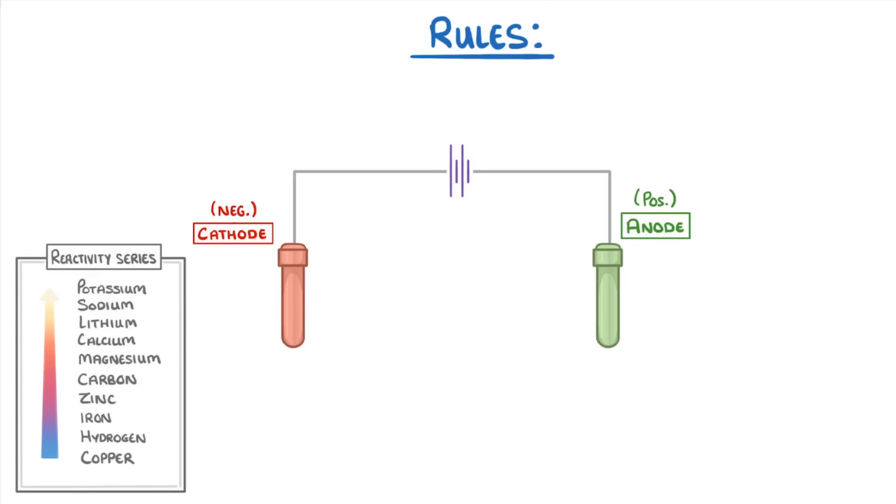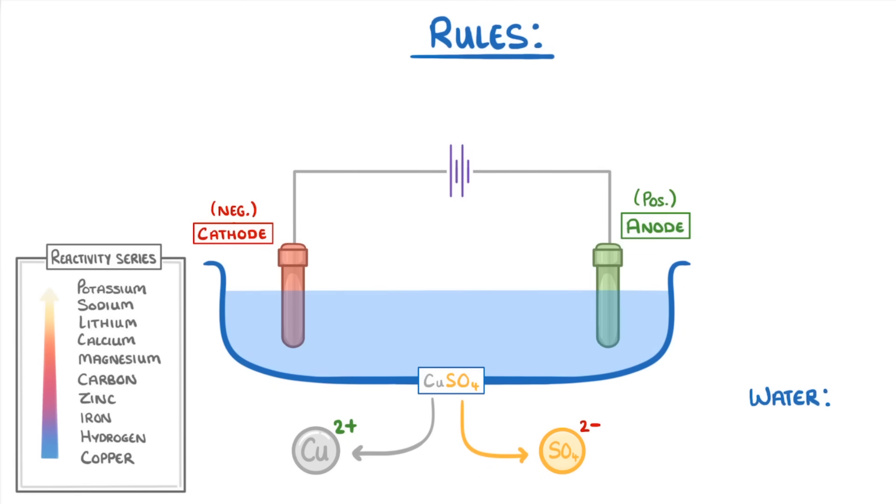To see how all of this works, let's see what would happen if our electrolyte was an aqueous solution of copper sulfate. The first step is to work out which ions we'd have in the solution. From the copper sulfate, we'd have copper 2+ ions and SO4 2- ions. Then from the water, because remember it's an aqueous solution, we'd have H+ and OH- ions.